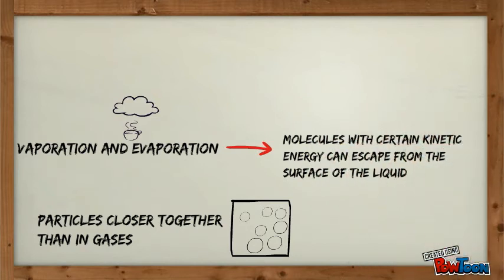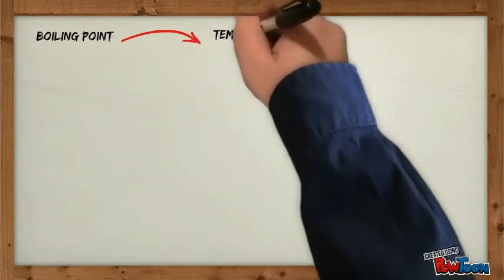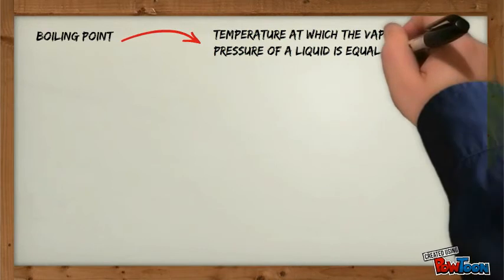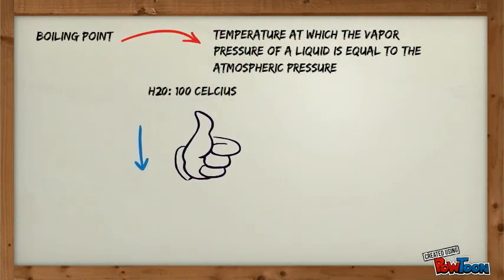This happens because molecules have a certain kinetic energy that can let them escape from the liquid surface. Each liquid has a boiling point, which is the temperature at which the vapor pressure of a liquid is equal to the atmospheric pressure. Vapor pressure is the measurement after evaporation of a liquid in a closed container. The boiling point decreases when elevation increases.